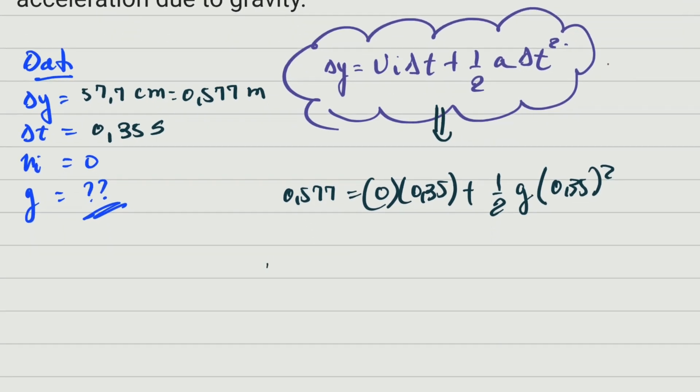That would be the acceleration due to gravity. When we do the calculation, we get 9.42 meters per second squared, and that is the answer.